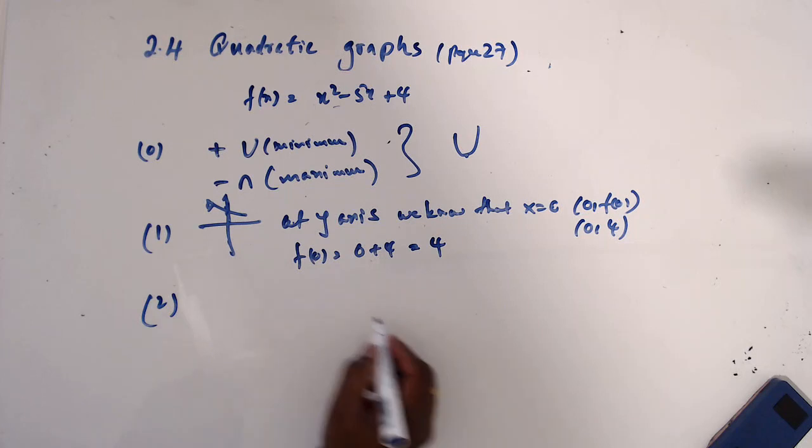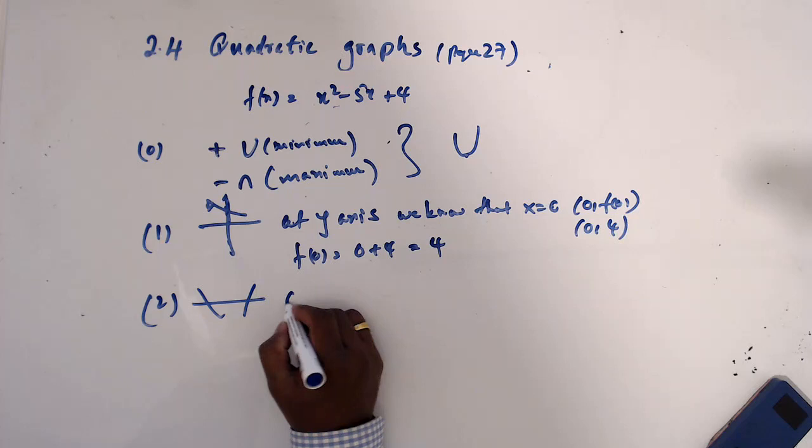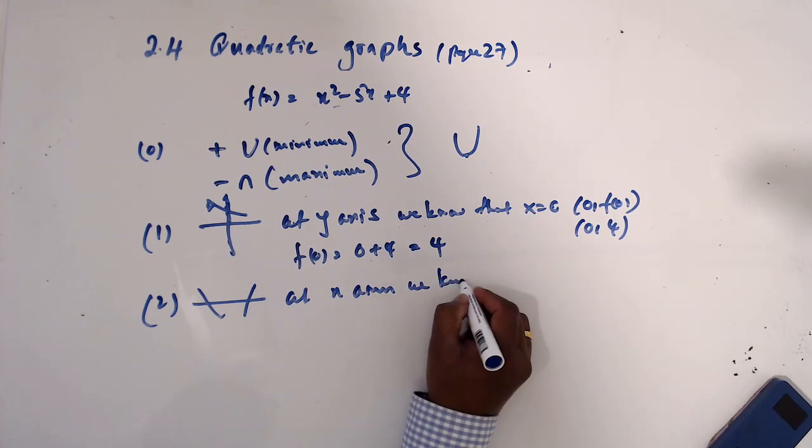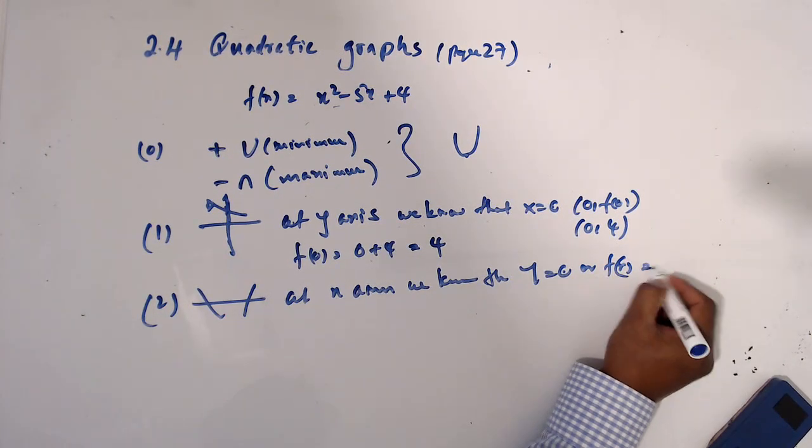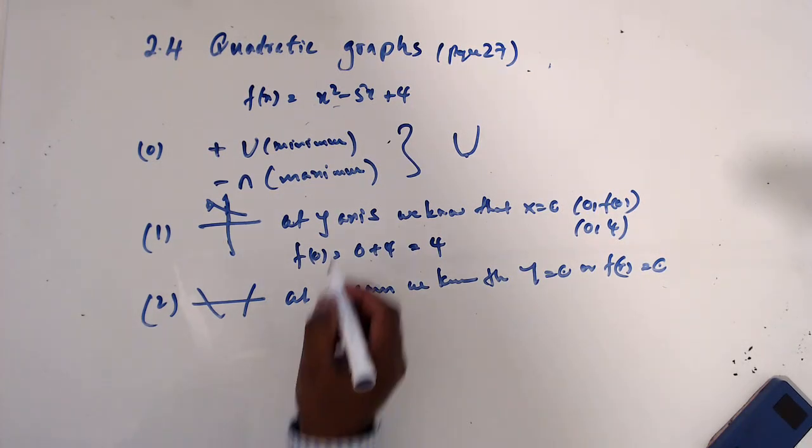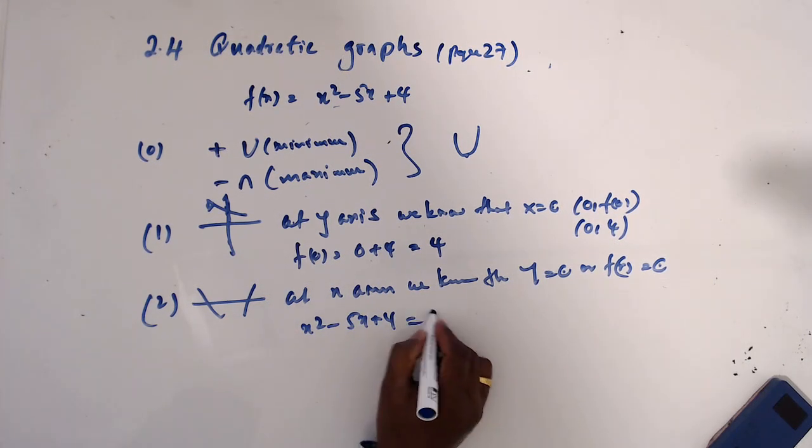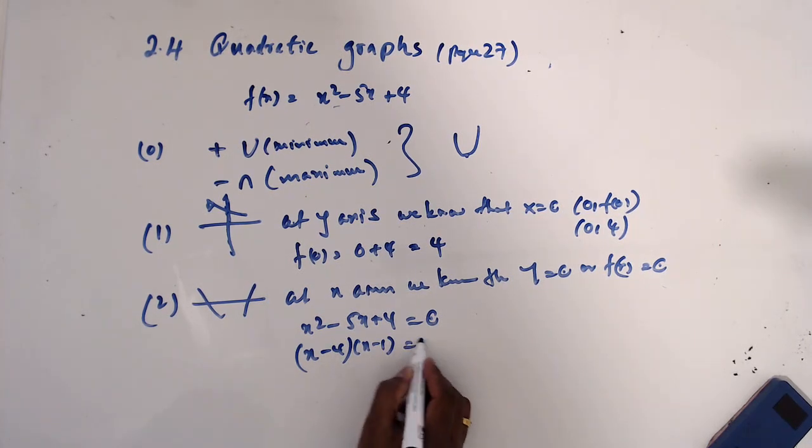And question 2, we want to find where the graph cuts the x-axis. At the x-axis we know that y equals 0, or f(x) equals 0. And we'll make x squared minus 5x plus 4 equals 0. This will make (x minus 4)(x minus 1) equals 0.